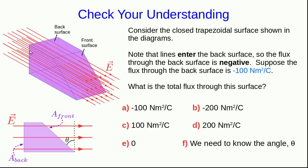And I'm just going to make up a number. Let's suppose the flux through the back surface is negative 100 newton meter squared per coulomb. What's the total flux through this surface?